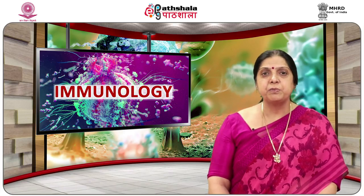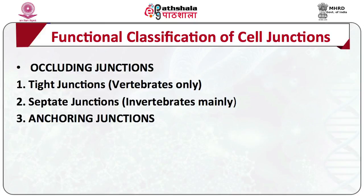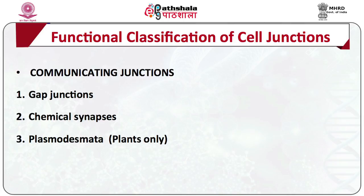For the functional classification of cell junctions: occluding or tight junctions are present only in vertebrates; septate junctions are present in invertebrates. Anchoring junctions consist of actin filaments with cell-to-cell attachment sites called adherins and cell-to-matrix sites called focal adhesions. Intermediate filament attachment sites include desmosomes (cell-to-cell) and hemidesmosomes (cell-to-matrix). Communicating junctions include gap junctions, chemical synapses, and plasmodesmata in plants.